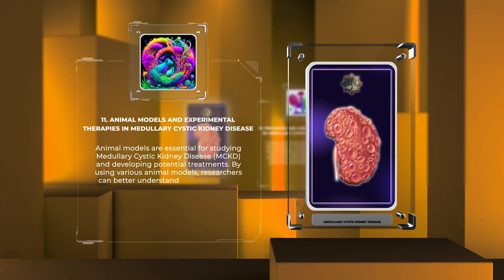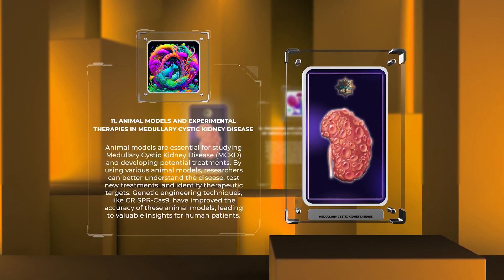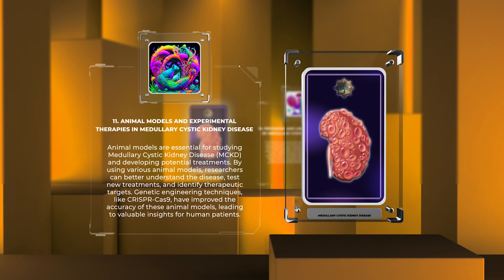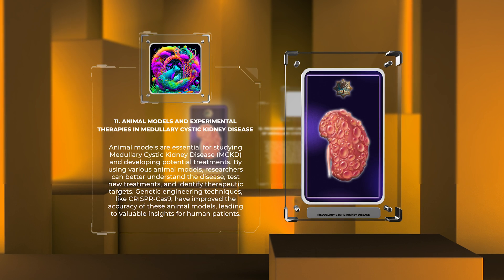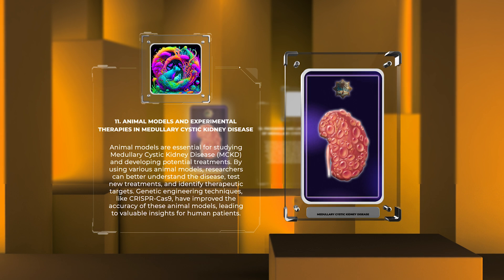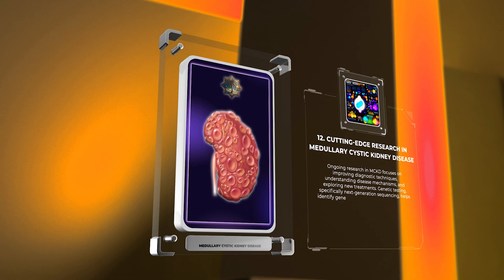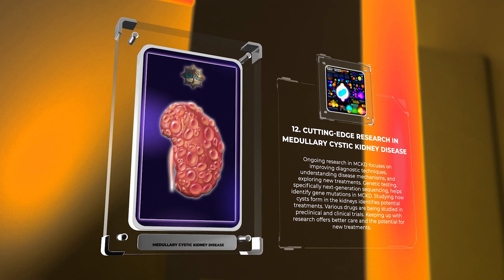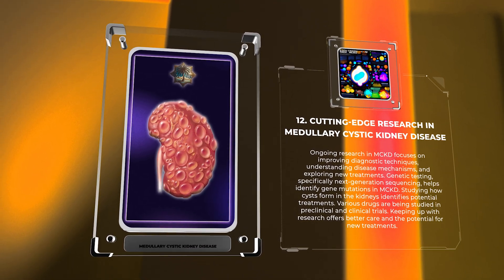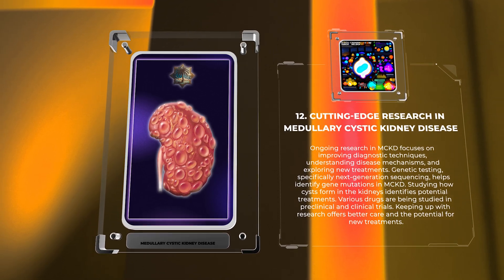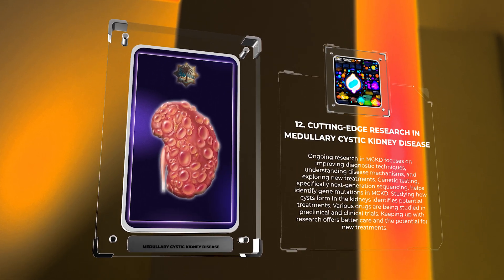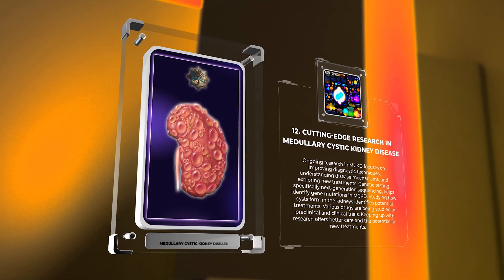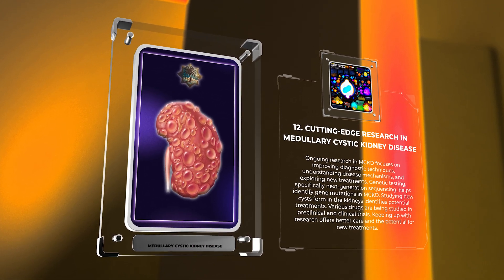Animal models are essential for studying MCKD and developing potential treatments. By using various animal models, researchers can better understand the disease, test new treatments, and identify therapeutic targets. Genetic engineering techniques like CRISPR-Cas9 have improved the accuracy of these animal models, leading to valuable insights for human patients. Ongoing research in MCKD focuses on improving diagnostic techniques, understanding disease mechanisms, and exploring new treatments. Genetic testing, specifically next-generation sequencing, helps identify gene mutations in MCKD. Various drugs are being studied in preclinical and clinical trials, and keeping up with research offers better care and the potential for new treatments.